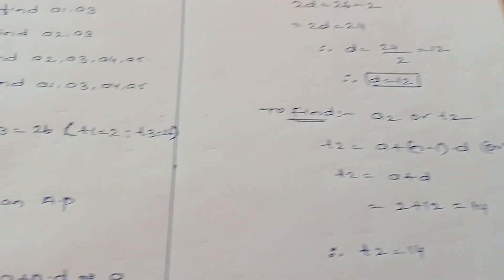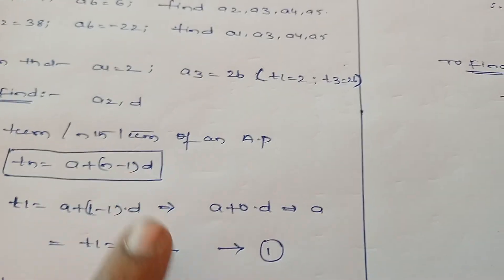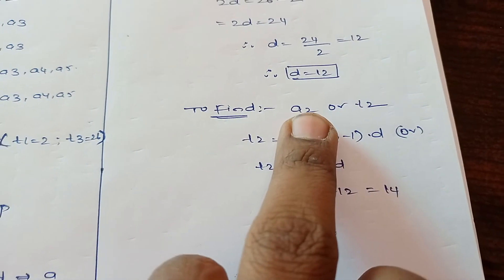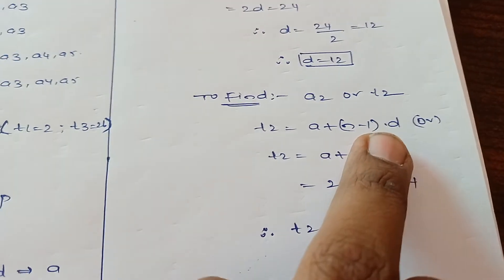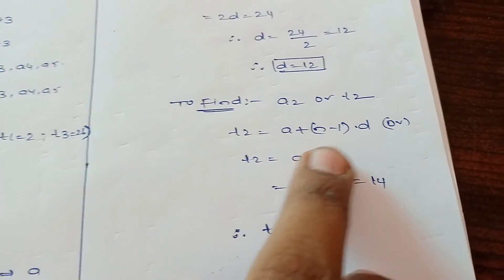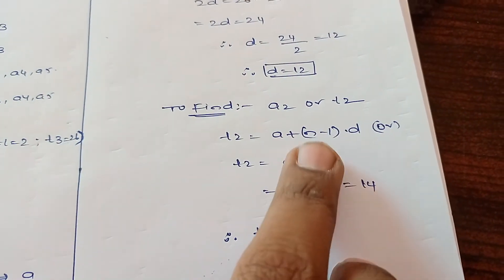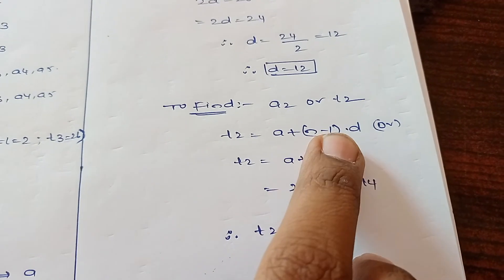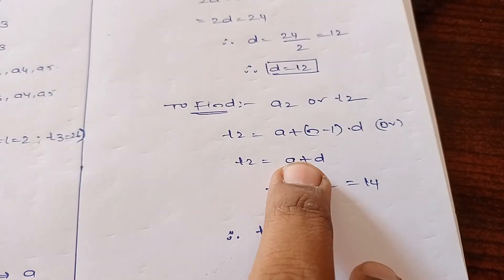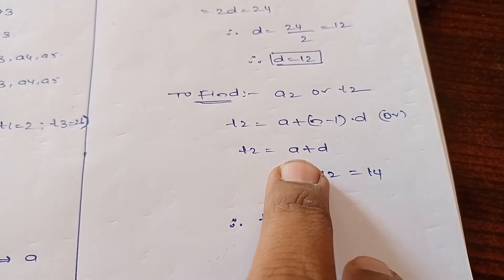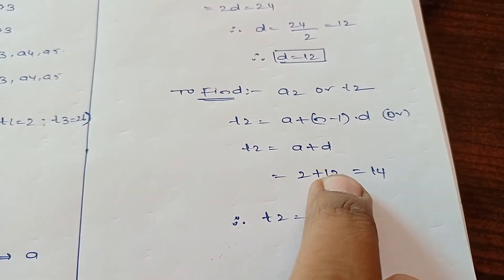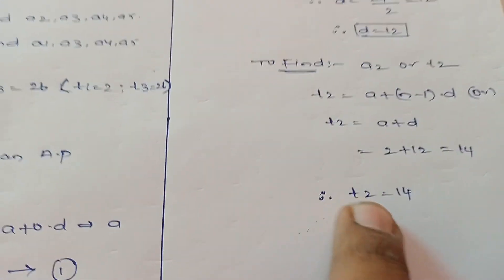Now we got d value and we know the a value, the a1 or t1 value, then we can find any term. Now what to find here: t2 or a2. t2 value is a plus n minus 1 into d. Or we can write in another way, the formula is a plus, n is 2, so 2 minus 1 is 1, so 1d. You can write t2 as a plus d also.